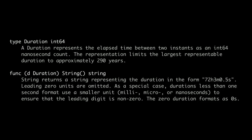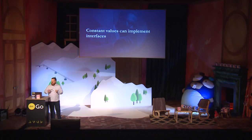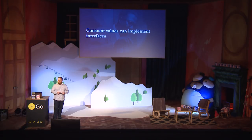The reason for this is time.Duration has a String method. Thus, any time.Duration value, even a constant, knows how to pretty print itself. Now, we know that constant values are typed, and because types can declare methods, we can derive that constant values can fulfill interfaces. The fmt package doesn't assert that the values it was given have a String method — it asserts that they fulfill the Stringer interface.